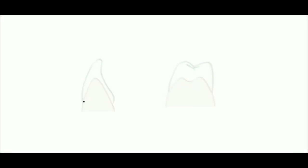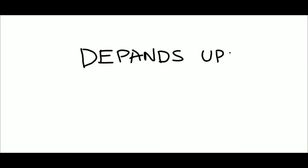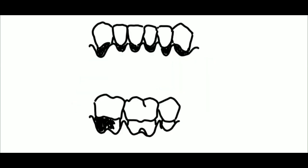Interdental gingiva—we know what interdental gingiva is and its shape. This shape depends upon three factors. First, its presence and absence of a contact point between adjacent teeth. Secondly, the distance between the contact points and the osseous crest. And third, presence and absence of some degree of recession.